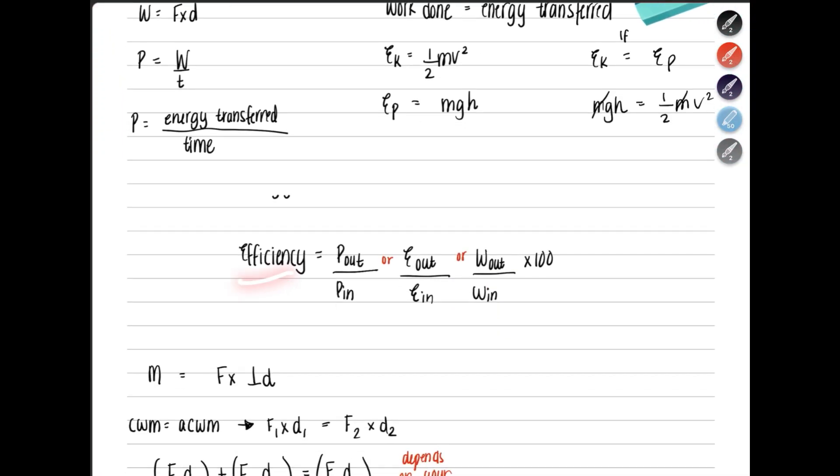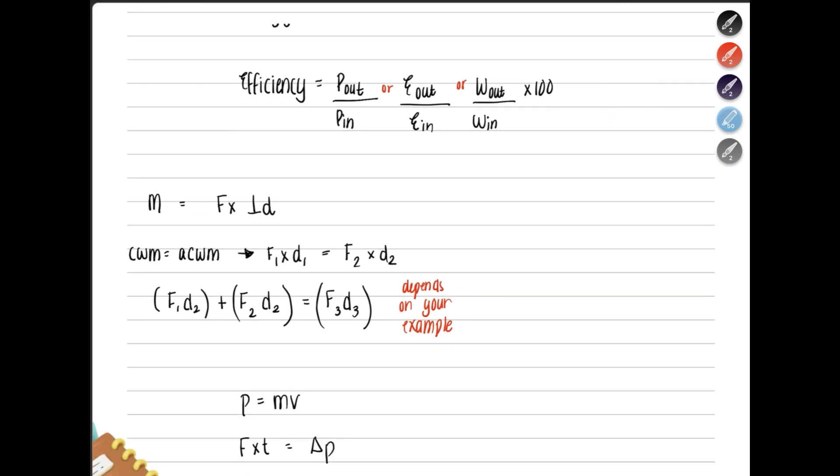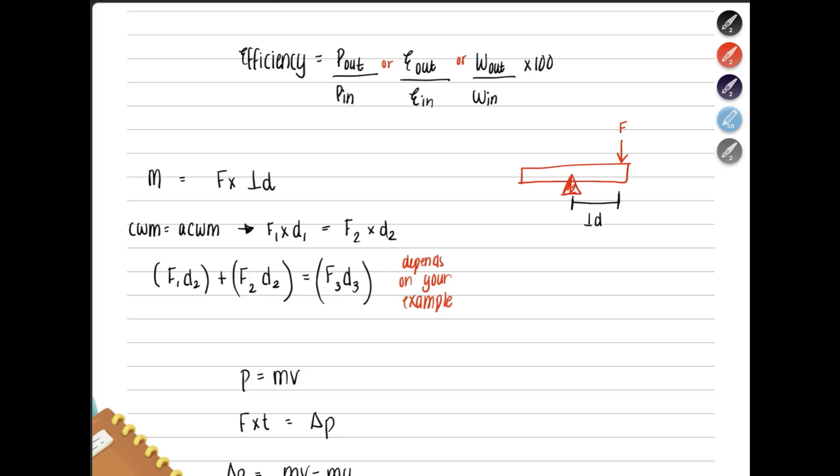Then we have efficiency, the ratio between the useful and the total power, energy, or work done. Basically, power out over power in, or energy output over energy in, or work done output over work done input. And then you have to multiply this by 100 to get the efficiency because the unit is in percentage. Then you have moment of force multiplied by the perpendicular distance. Because if you have an object with a pivot, and this force is applied like this, then you need to know the perpendicular distance between them. Not the parallel distance.